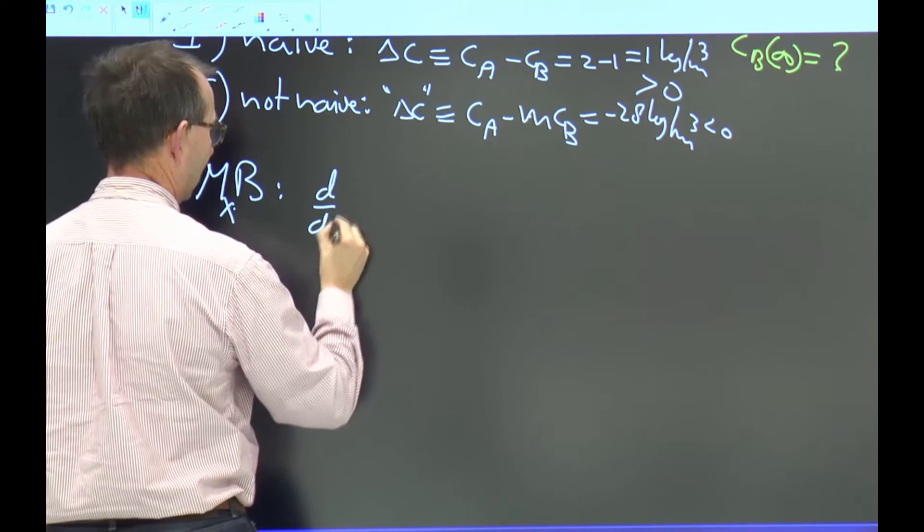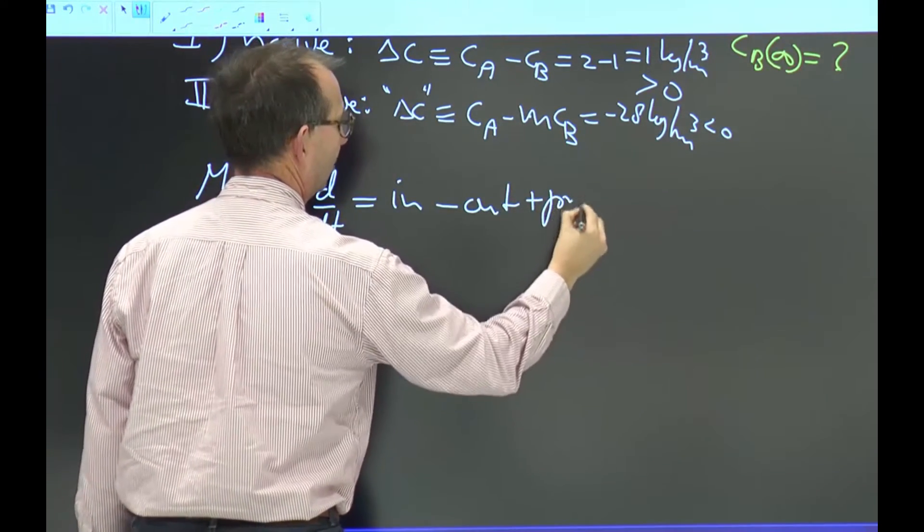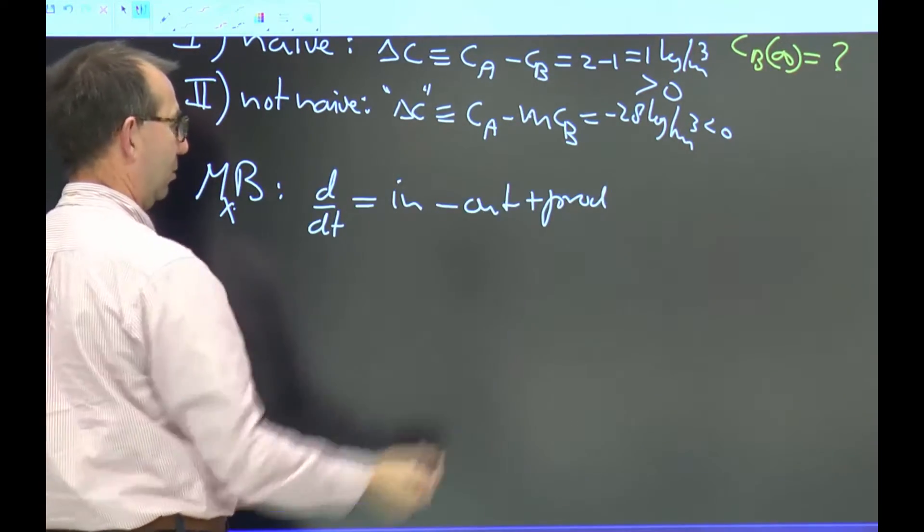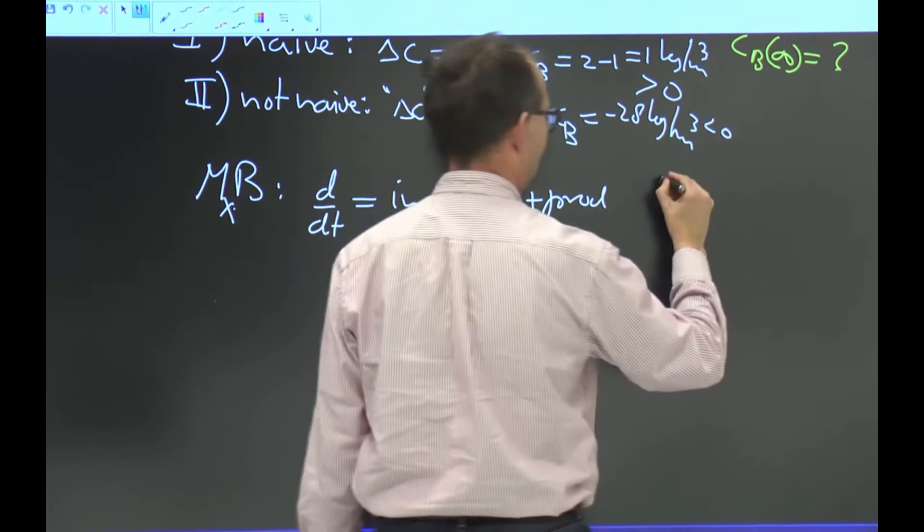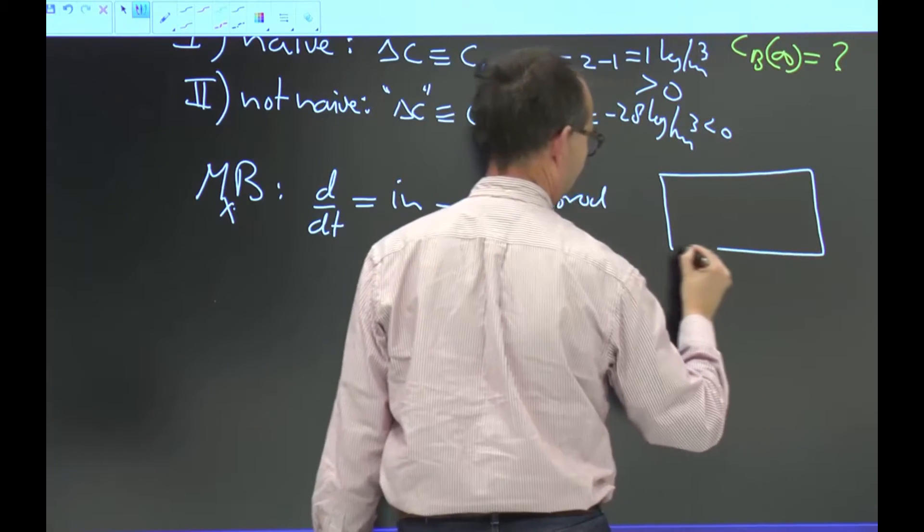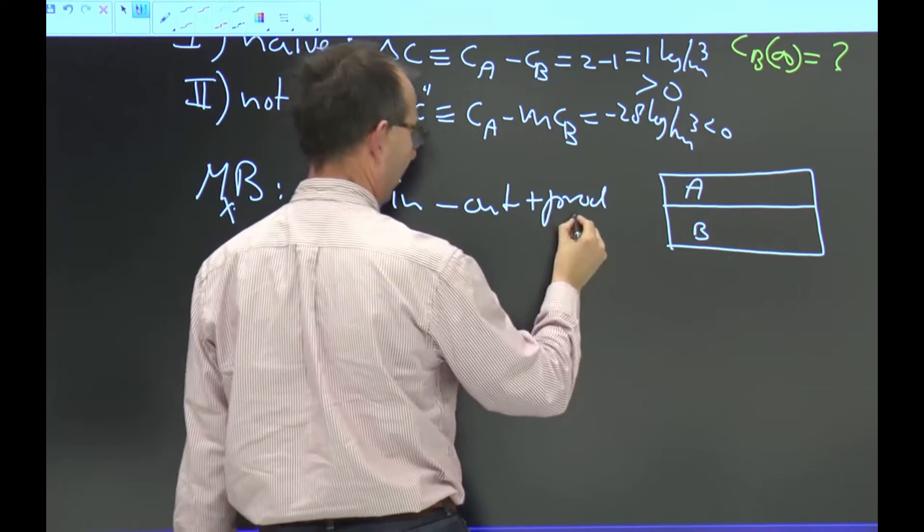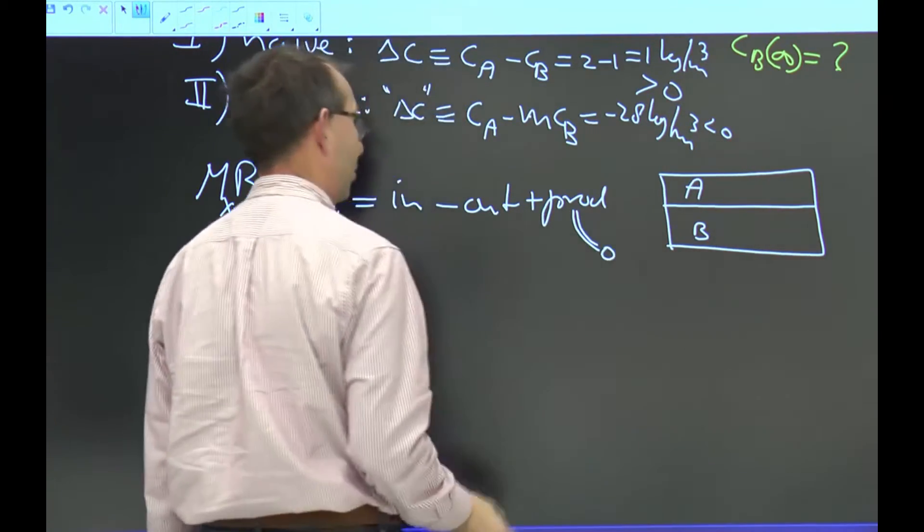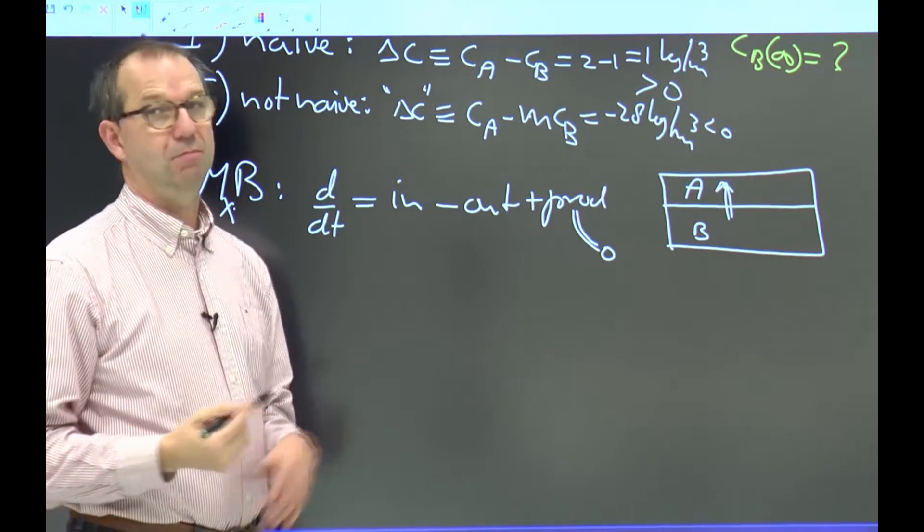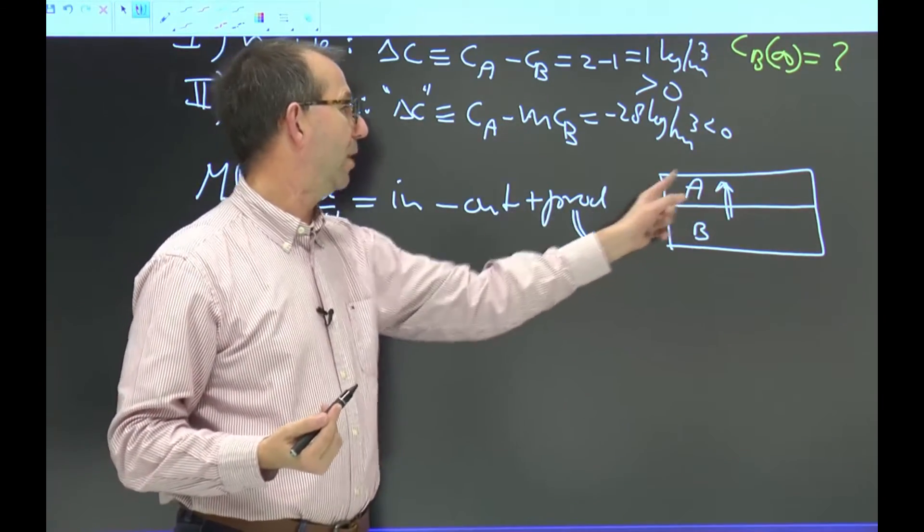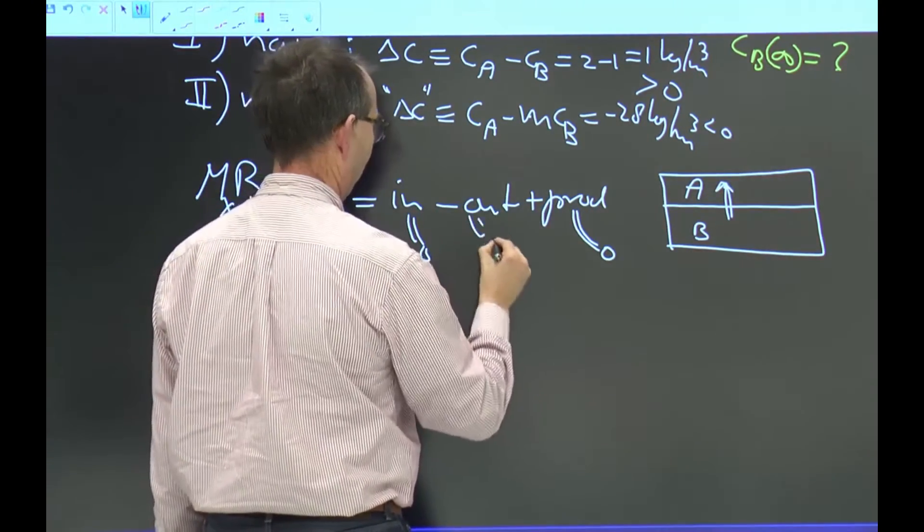We need a mass balance for component X. And thus the d/dt equals in minus out plus production should be evaluated. But I can do so for mass of X if we decide for a control volume. And a handy control volume in this case is the entire system. Why? Well, there is no production of X in this system, so this is zero. If I take the total system, I know that the transport is in that direction. But for this balance, that doesn't matter, as this is an internal flow and that doesn't cross the boundaries of my control volume.